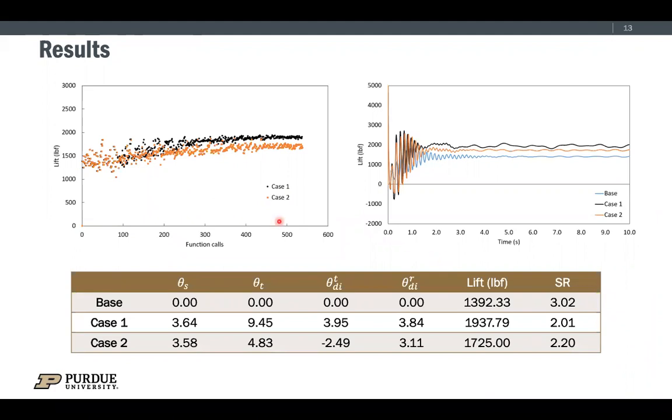Here is the result. The top left picture shows the convergence of the optimization. You can tell that both cases can converge to an optimum result. In addition, this plot also indicates that case one tends to converge to a higher lifting force. This result is reasonable as case two has additional strength constraint, which could limit the increase of the lifting force. This observation can be confirmed in the right picture, which shows the comparison of the lifting force for the optimum cases for each scenario. The optimum design variables and the corresponding lifts and the strength ratios are summarized in the bottom table.